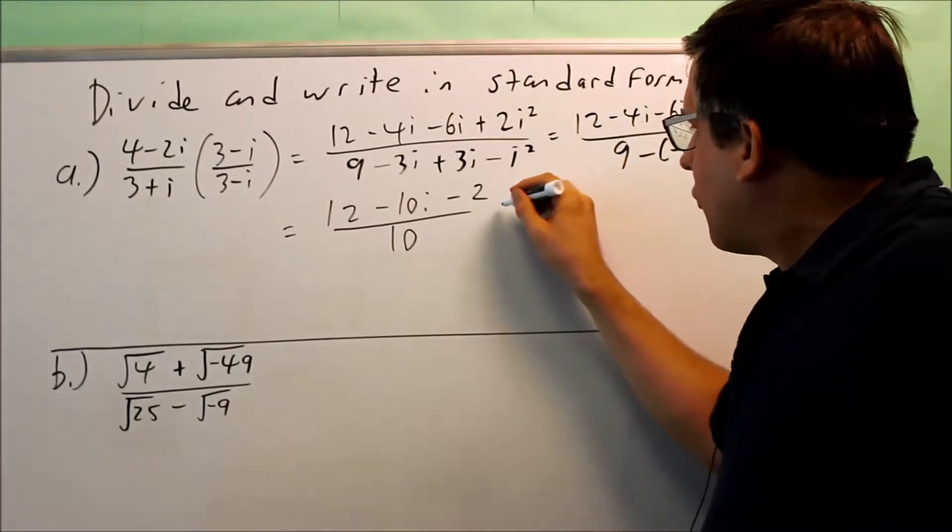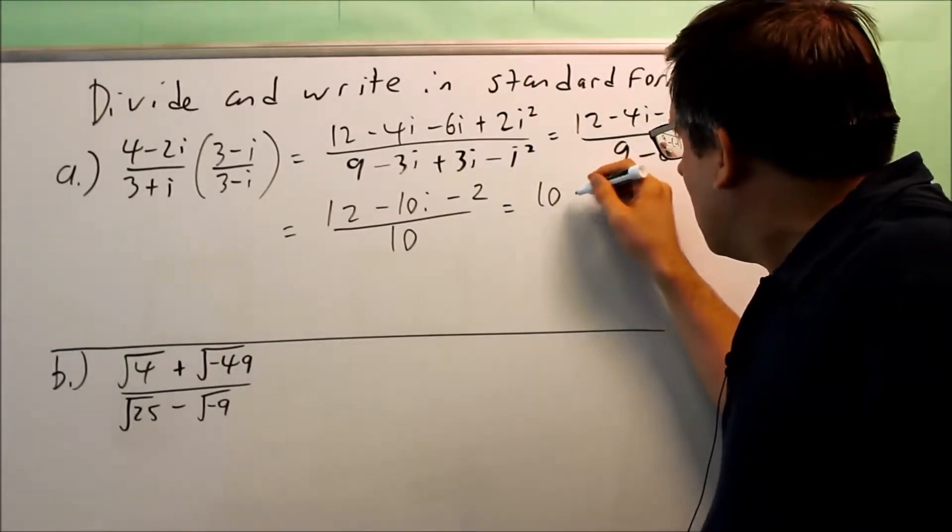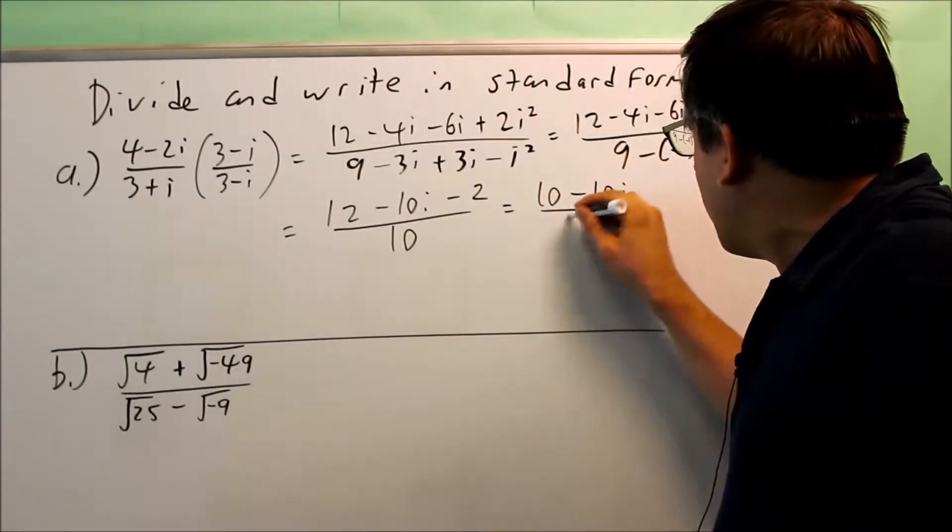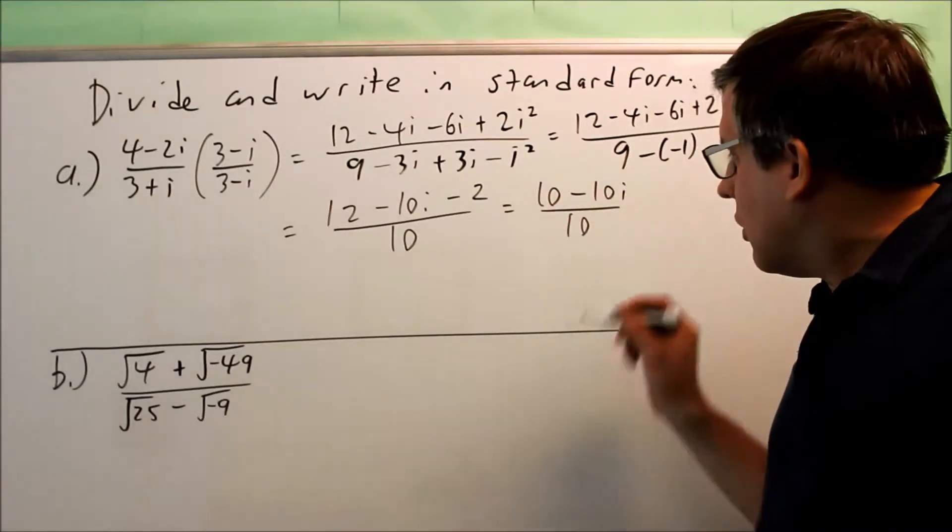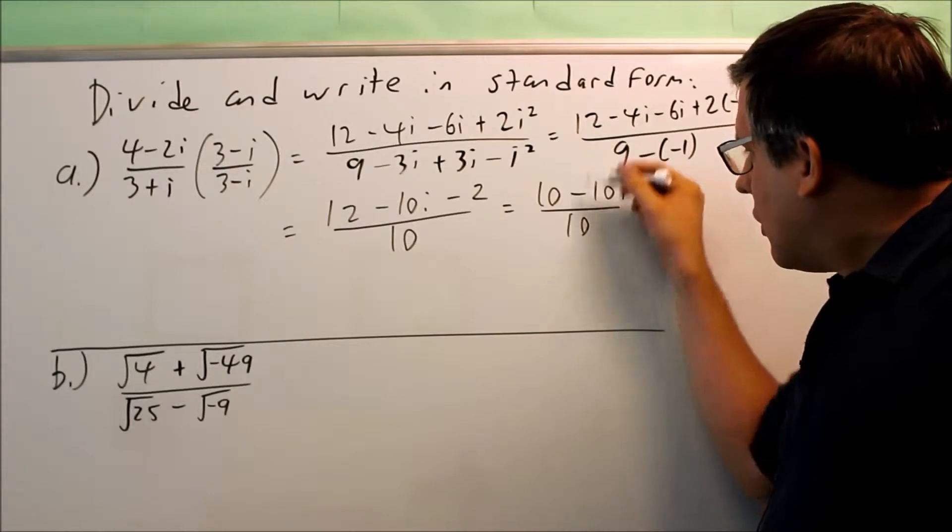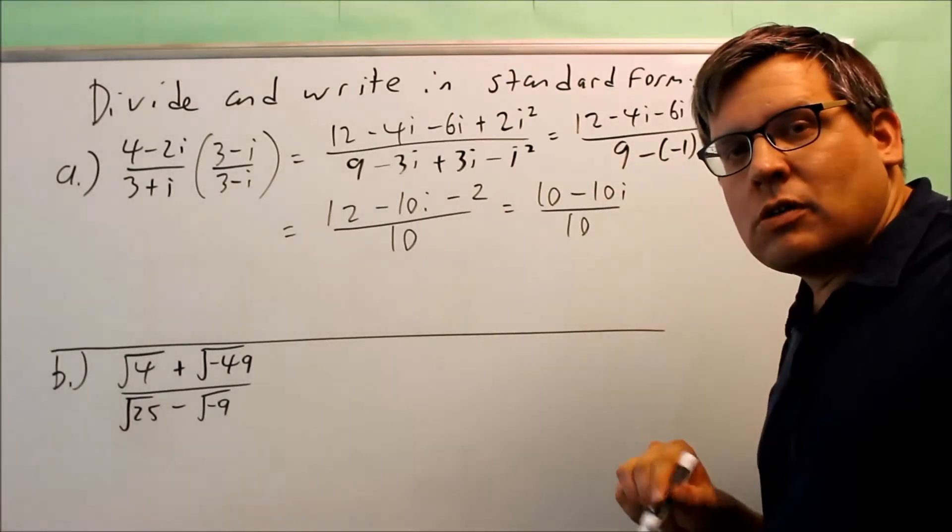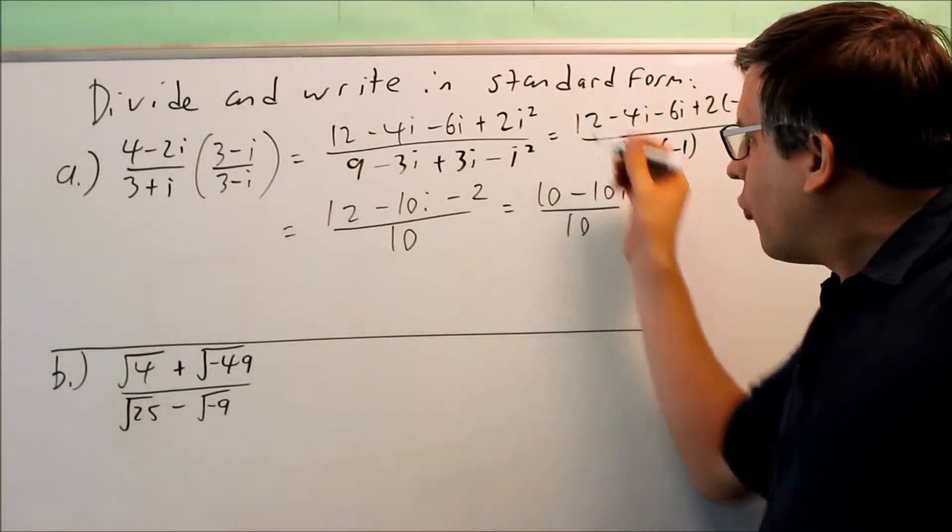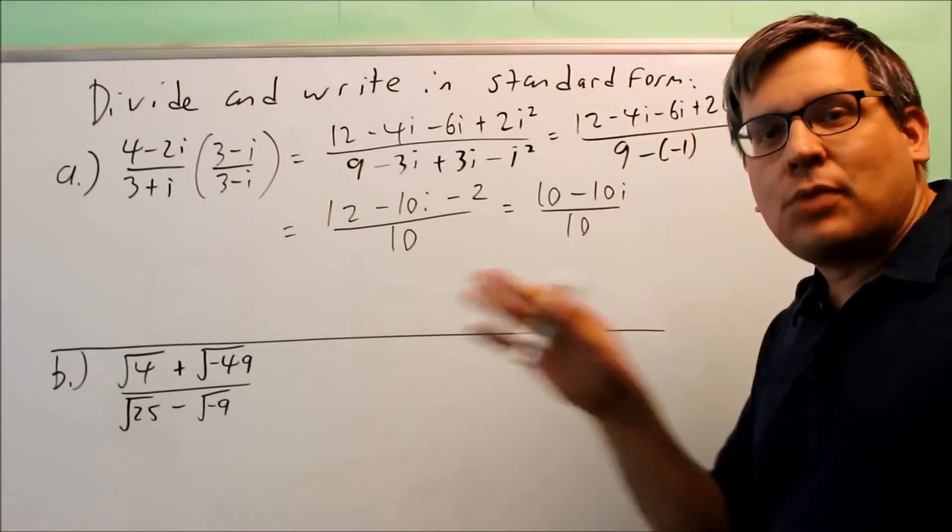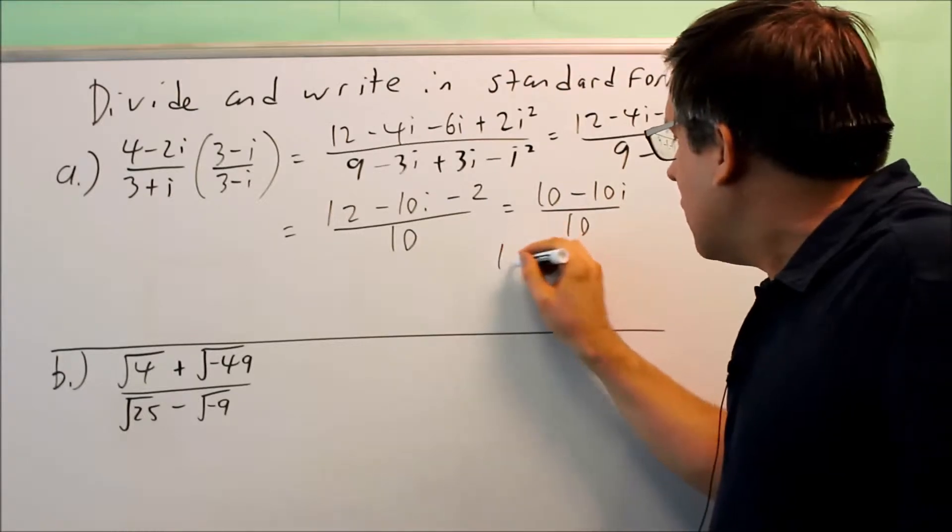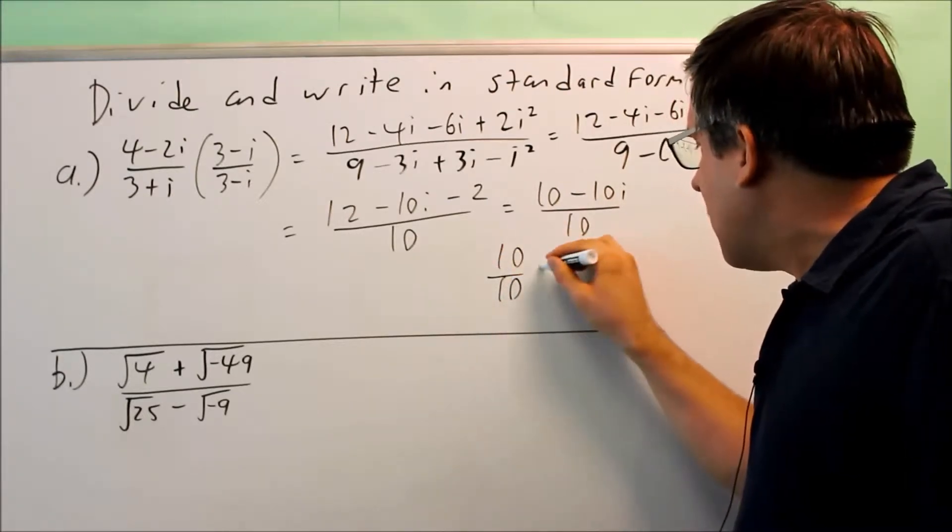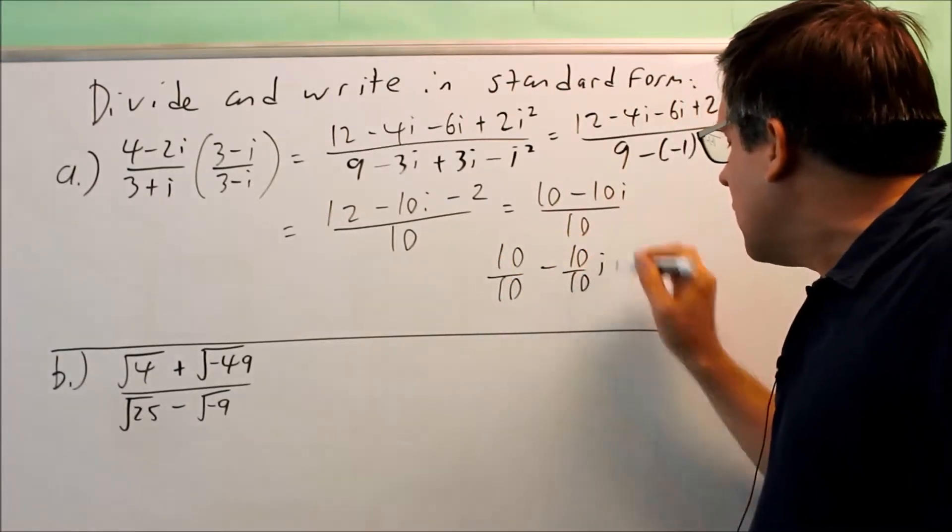So when I simplify this, I get 10 minus 10i all over 10. Now this is not the correct standard form because we have the whole thing is written as a fraction. In order for it to be in true standard form, you have to have an A and a B have to be separated. So I need to take this, I need to separate it by dividing each one individually by 10.